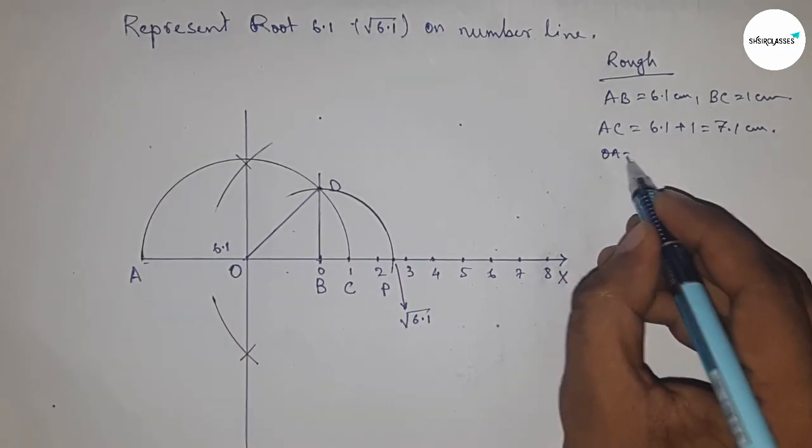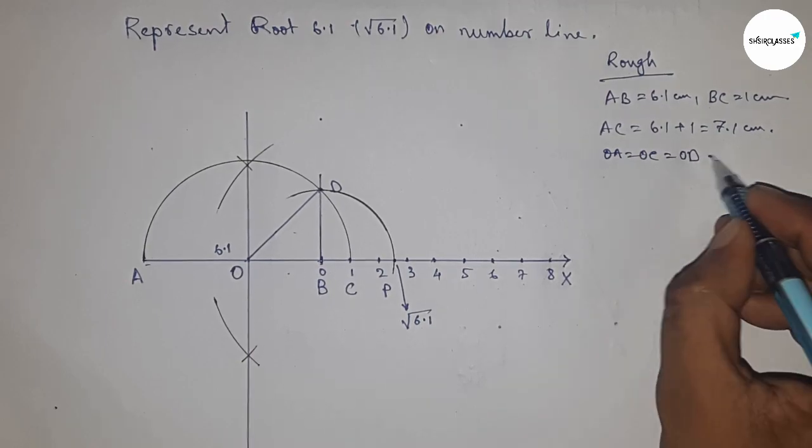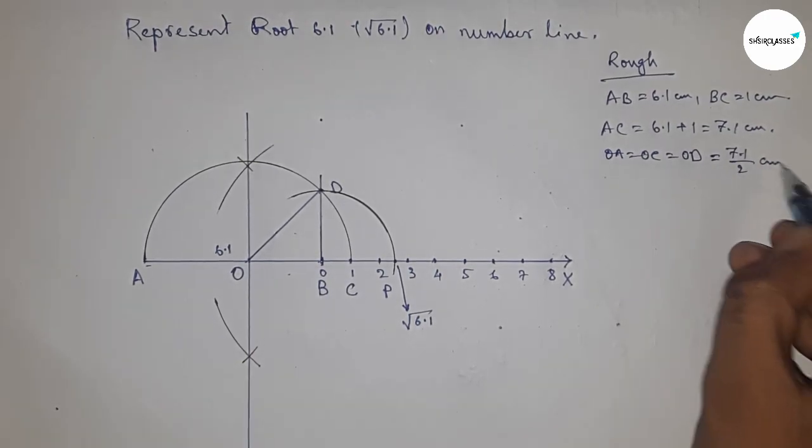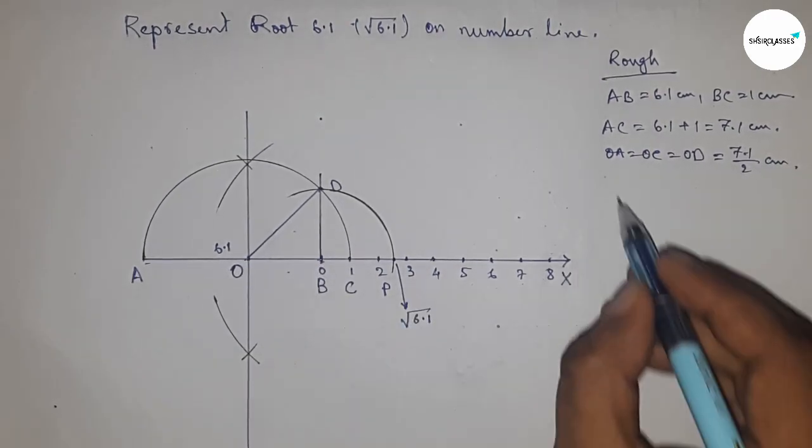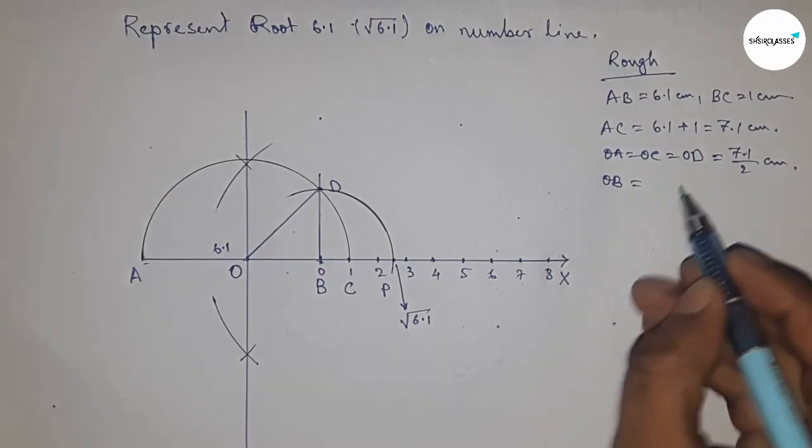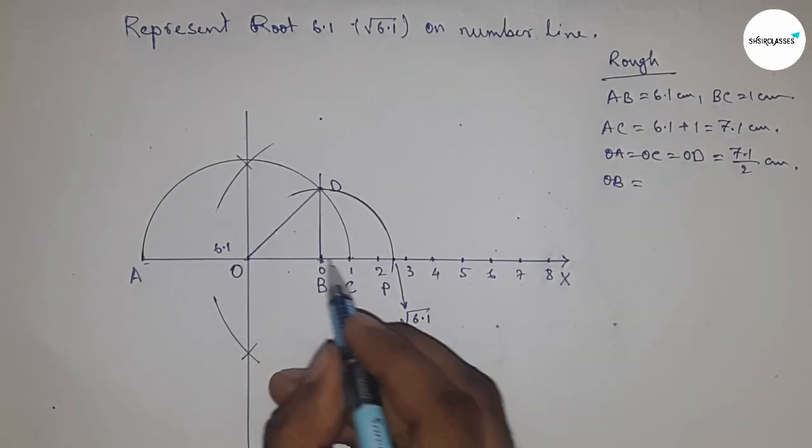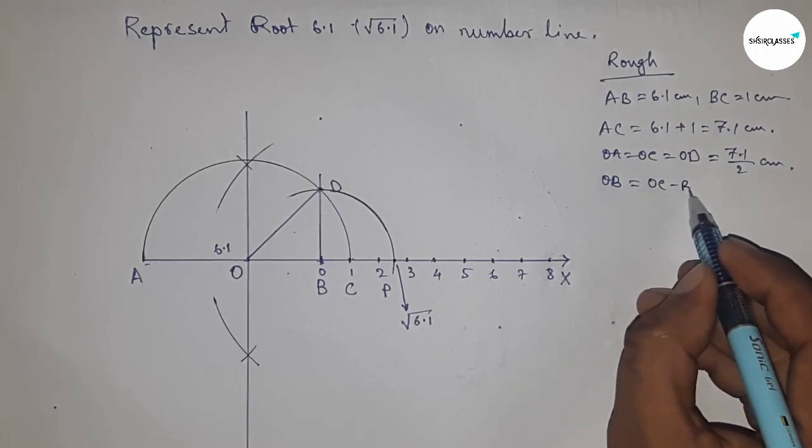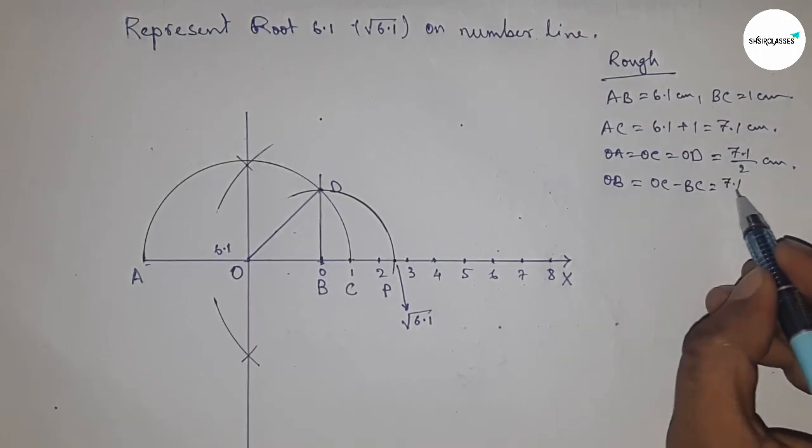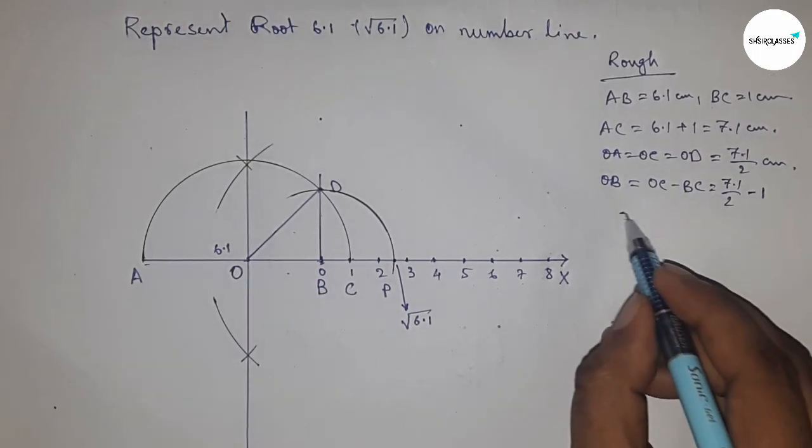Now radius OA, OC, and OD are equal, which equals 7.1 by 2 centimeters. The distance OB equals OC minus BC, so OB equals OC minus BC. Now putting the values of OC and BC and calculating this.